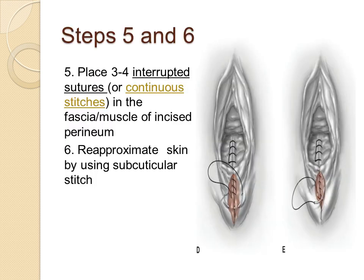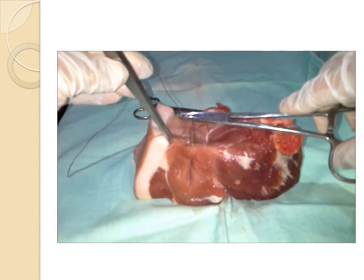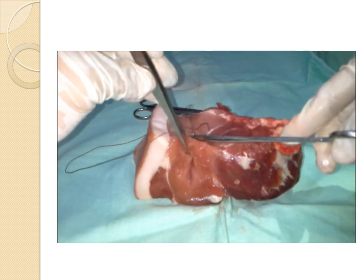Step 5 is to place 3 to 4 interrupted sutures or continuous stitches in the fascia or muscle of the incised perineum. Step 6 is to re-approximate the skin by using subcuticular stitches. Here is a video to demonstrate steps 5 and 6.